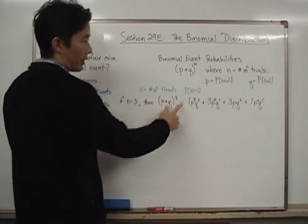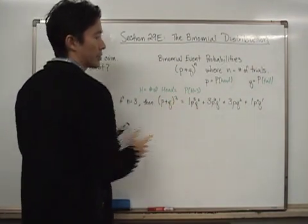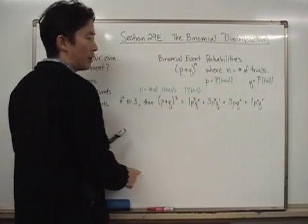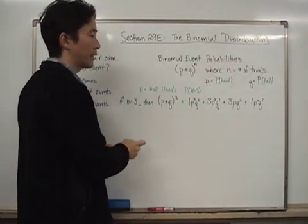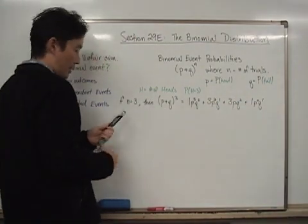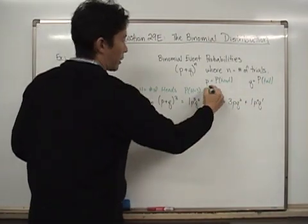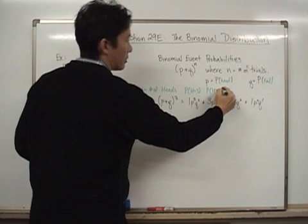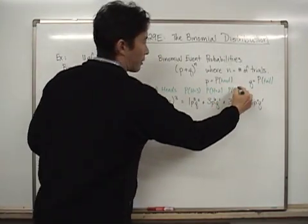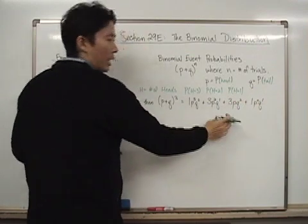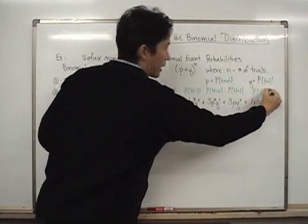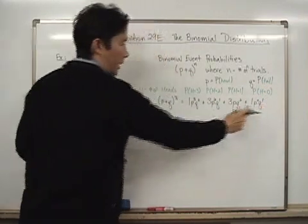So if we wanted to calculate what P of h equals three, we would just calculate this using those values of p and q, and we would come up with the probability. Now we need to find out what all of those are. So that means then that if I wanted to find out the probability of h equaling two, I would take this. If I wanted to find out the probability where h is equal to one, I would calculate this. And if I wanted to find out the probability when h is equal to zero, I would calculate that.